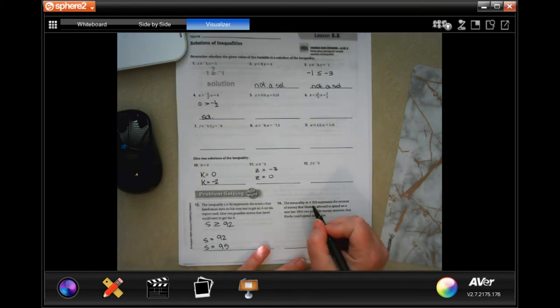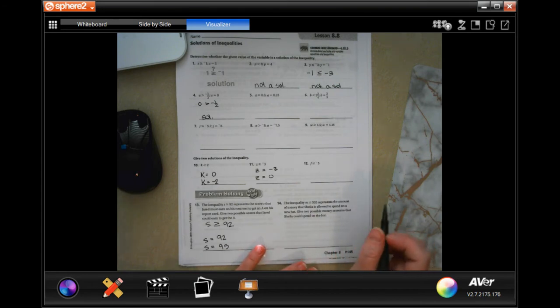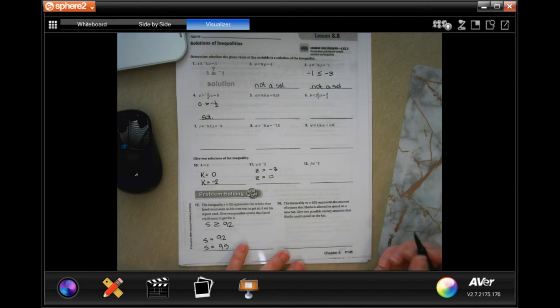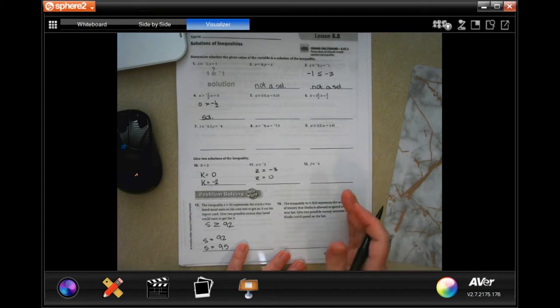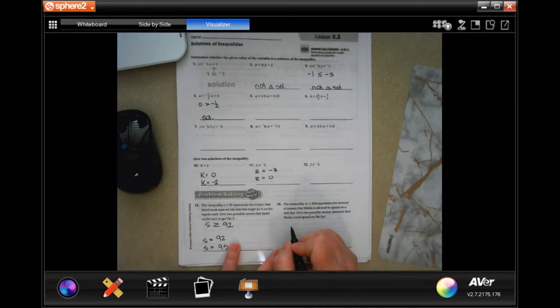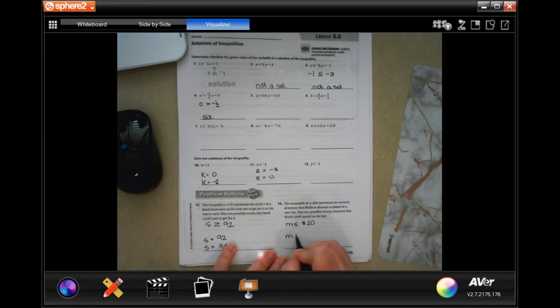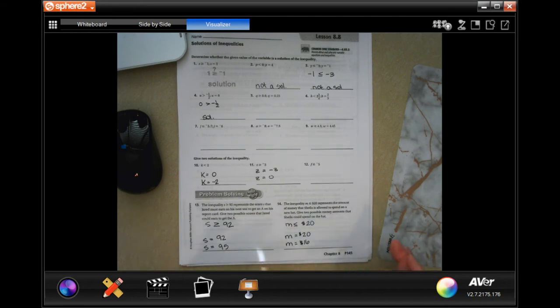The inequality, m, is smaller than or equal to $20 represents the amount of money that Sheila is allowed to spend on a new hat. Give two possible money amounts that Sheila could spend on a hat. So anything $20 or so from $20 to $0 because you can't spend negative money. So now m could be equal to $20, m could be equal to 19, 18, whatever, m equals, let's say $16. So this could be anything from $0 to $20.